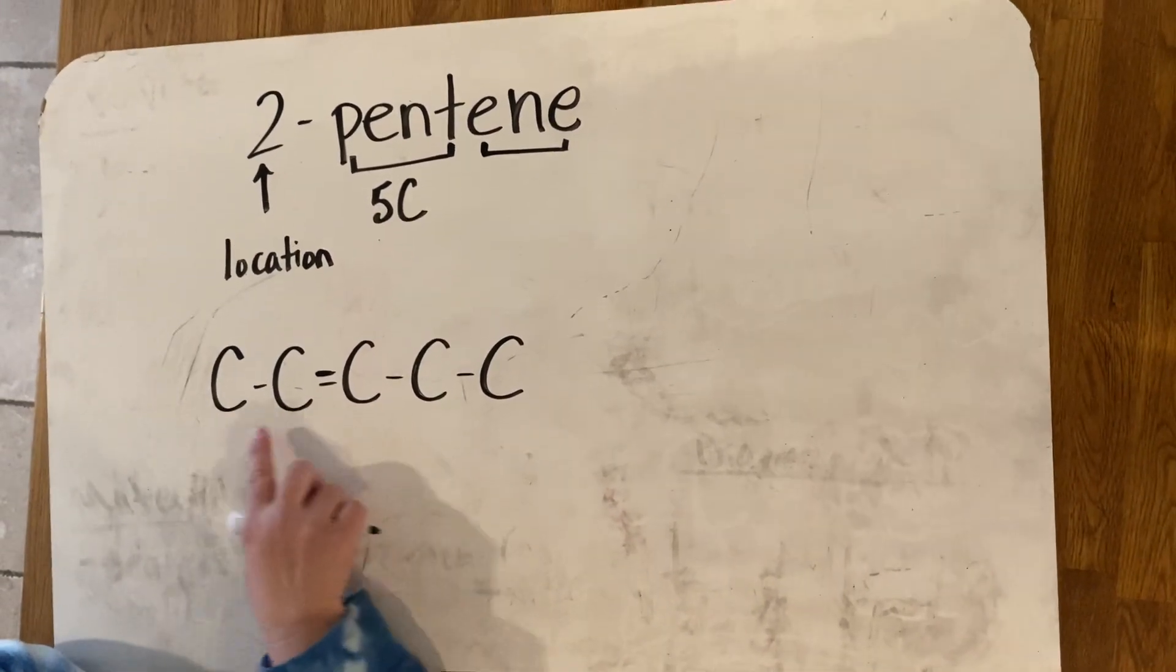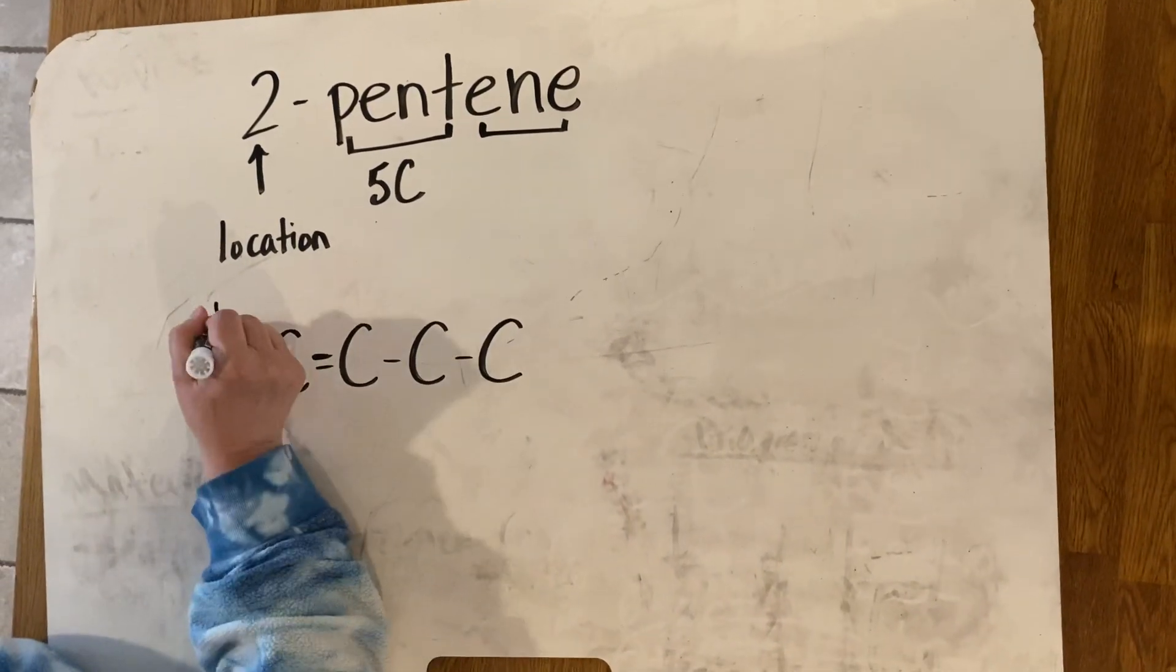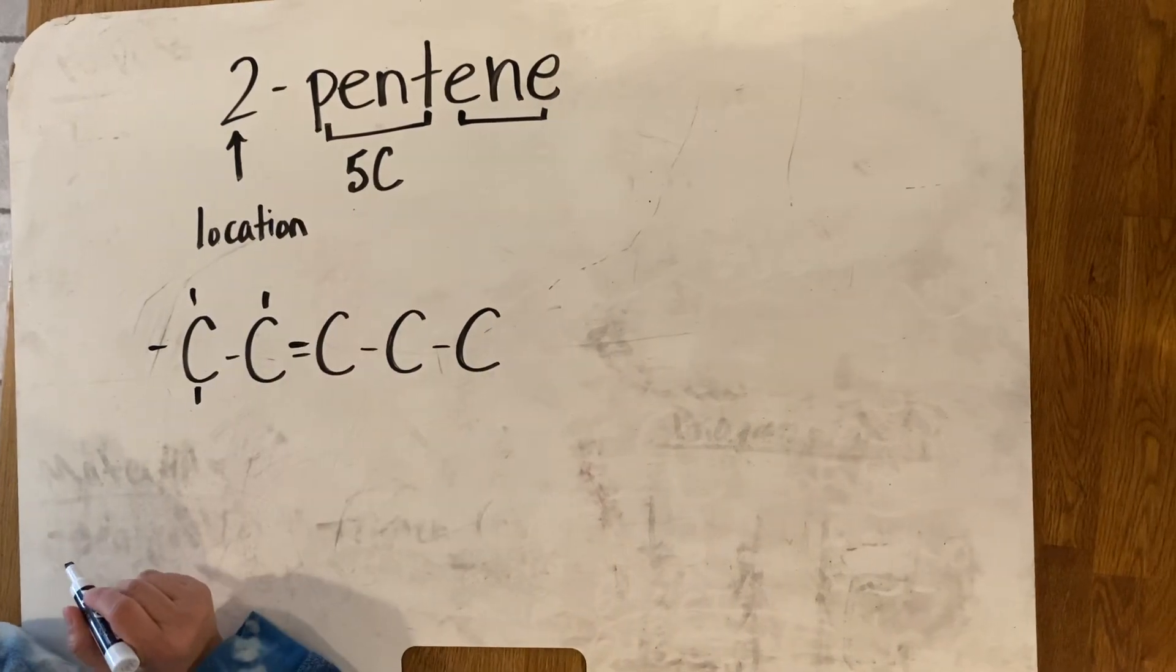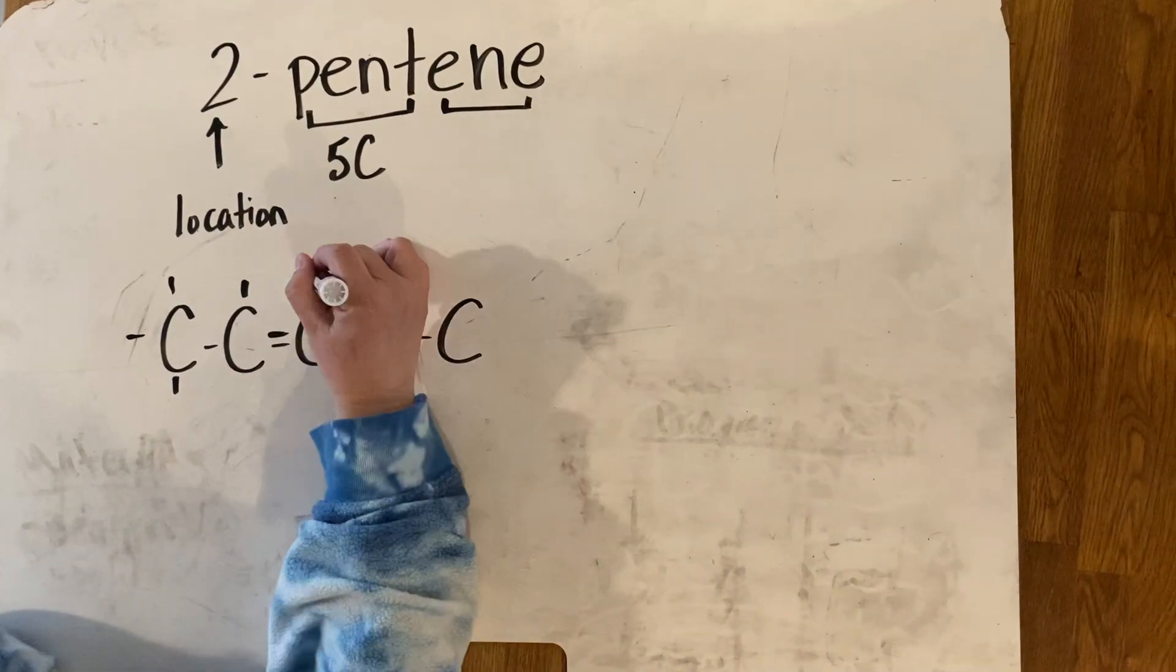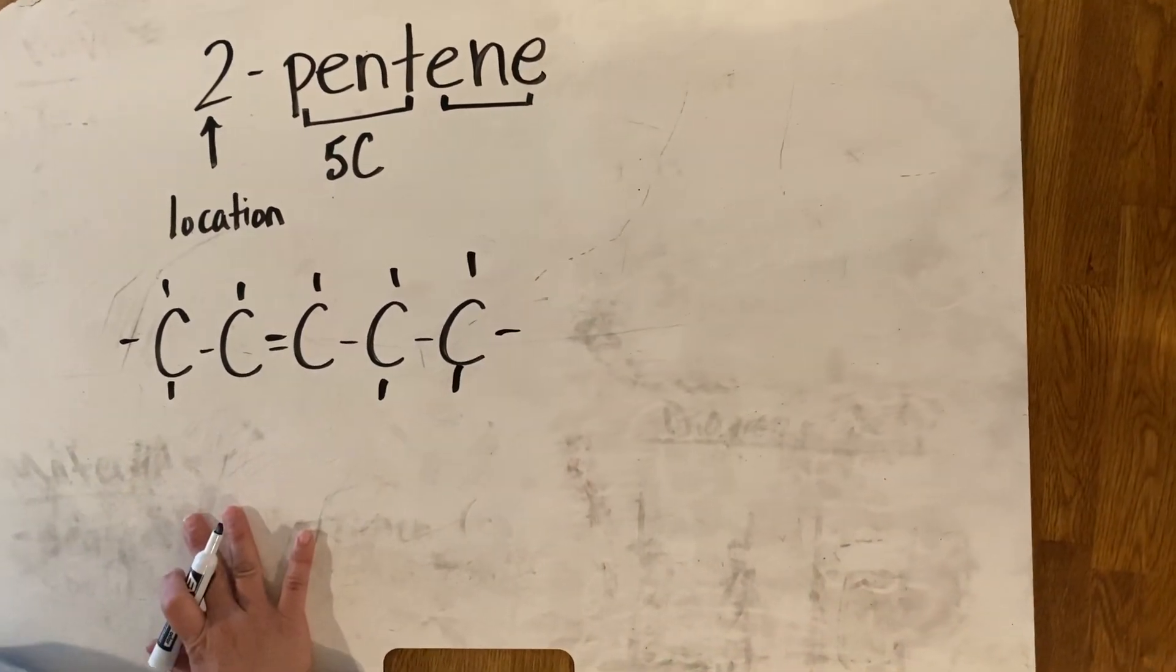Now remember, you still got to give everybody the octet by giving them H's all around them. This guy needs three more H's. I'm not going to write the H's in this time. This guy needs one more H. This guy needs one more H. Two here and three here. And that could be 2-pentene.